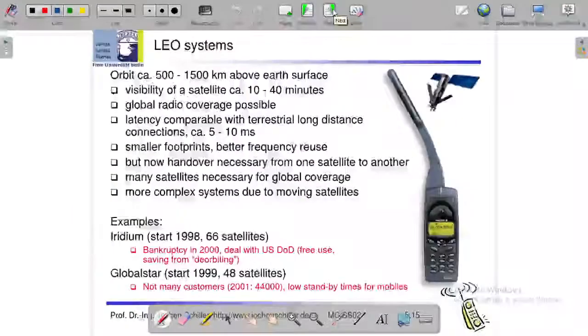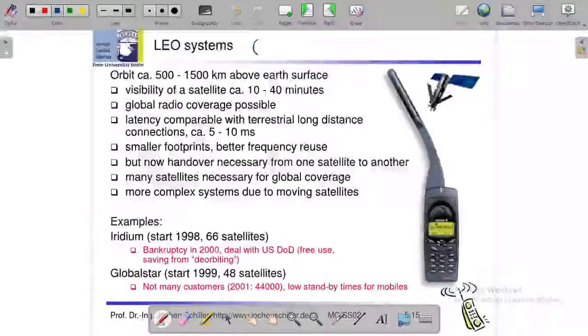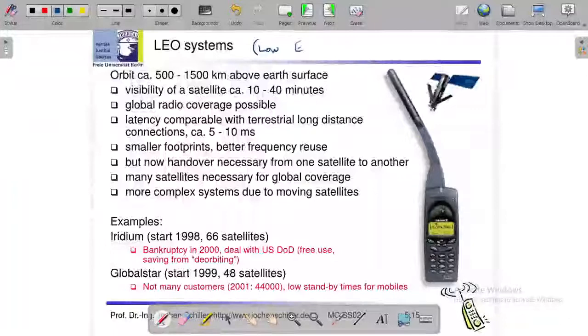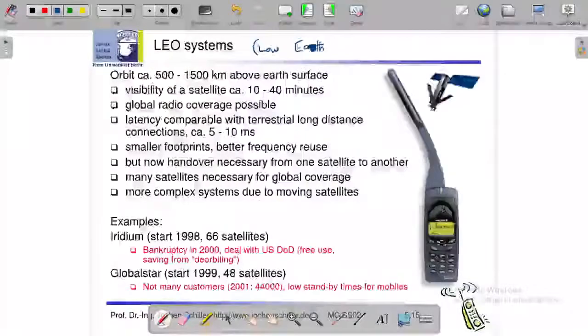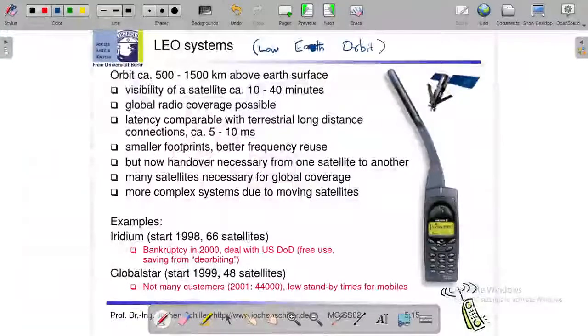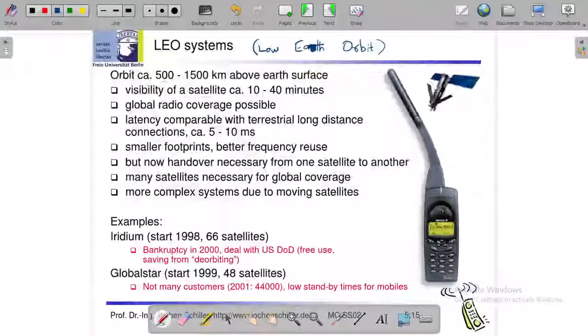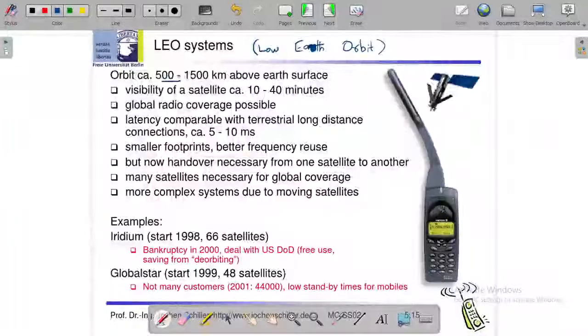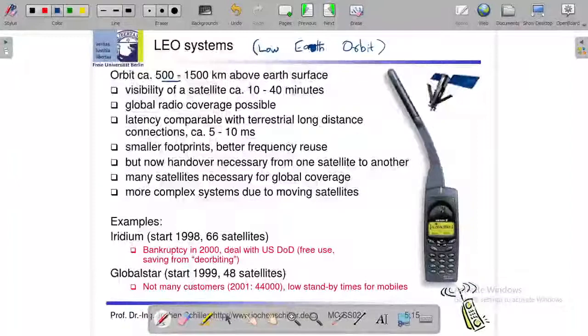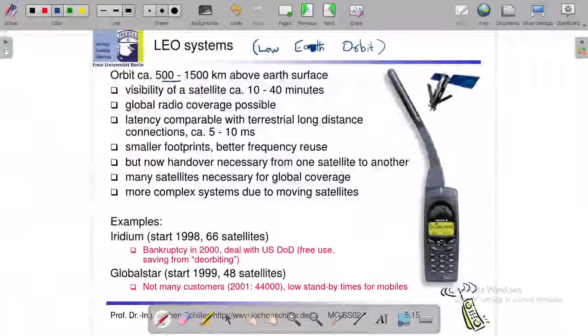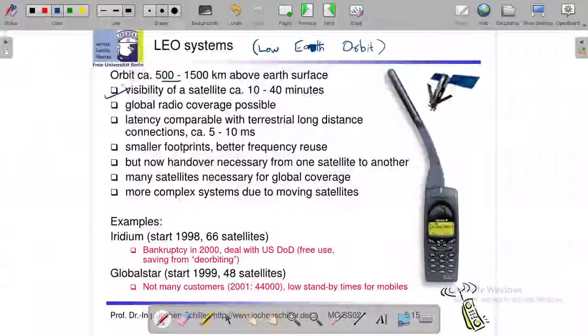The next one is LEO system. LEO is low earth orbit system, low earth orbit. So here orbit distance 500 to 1500 km above the earth surface and visibility of the satellite we can see it from about 10 to 40 minutes.